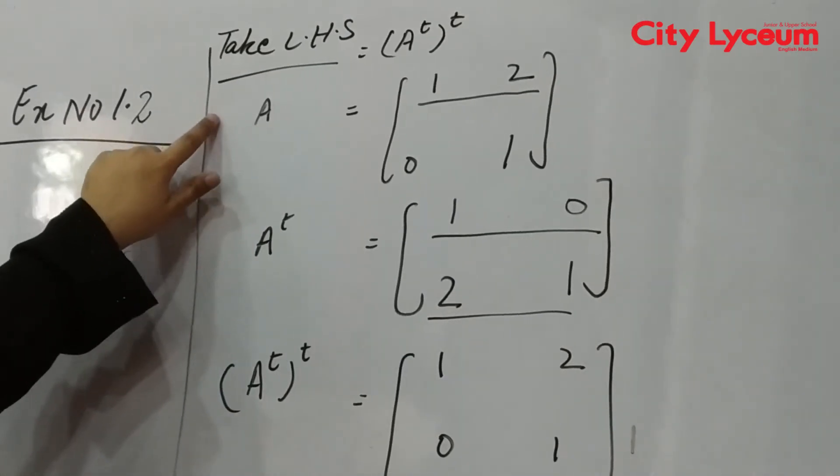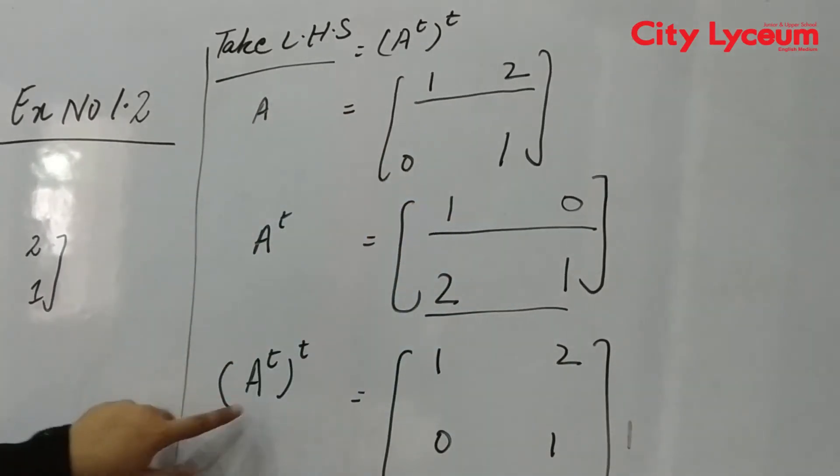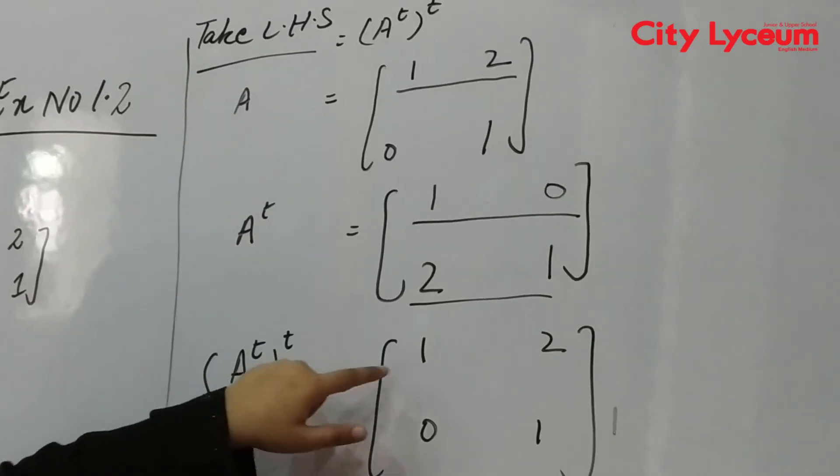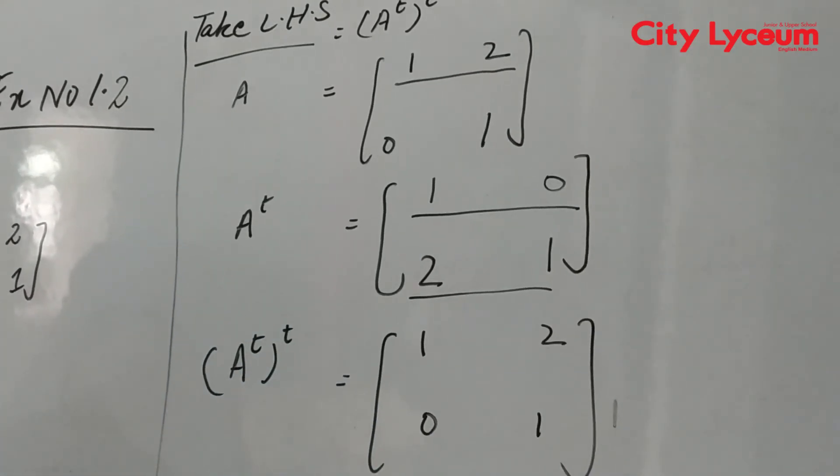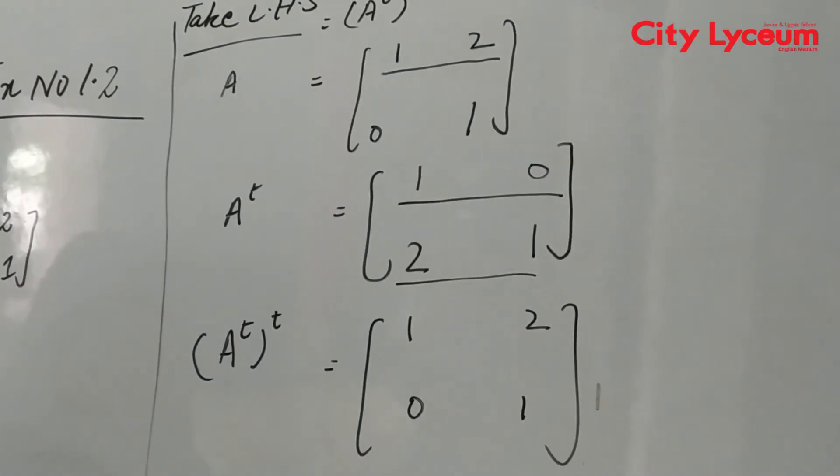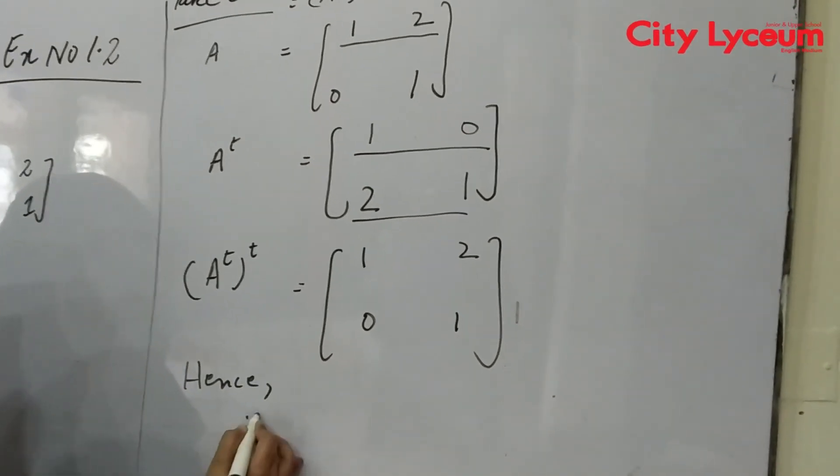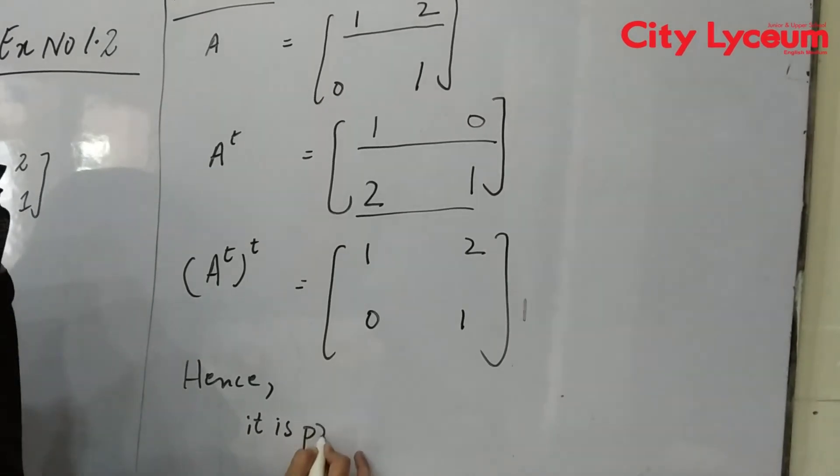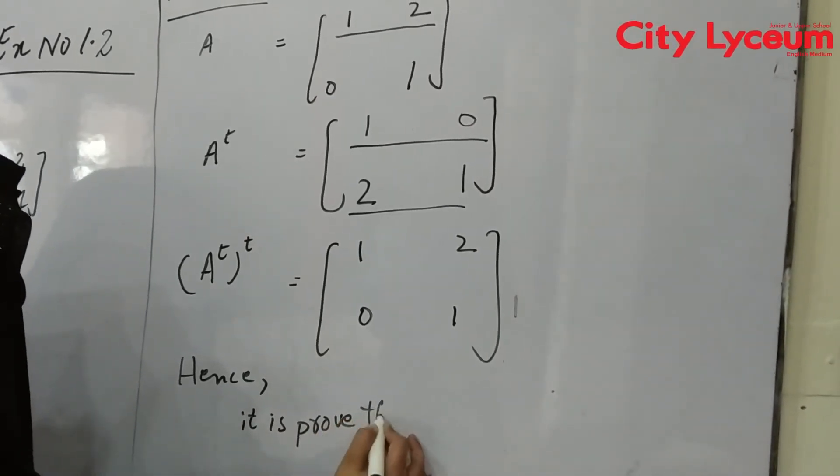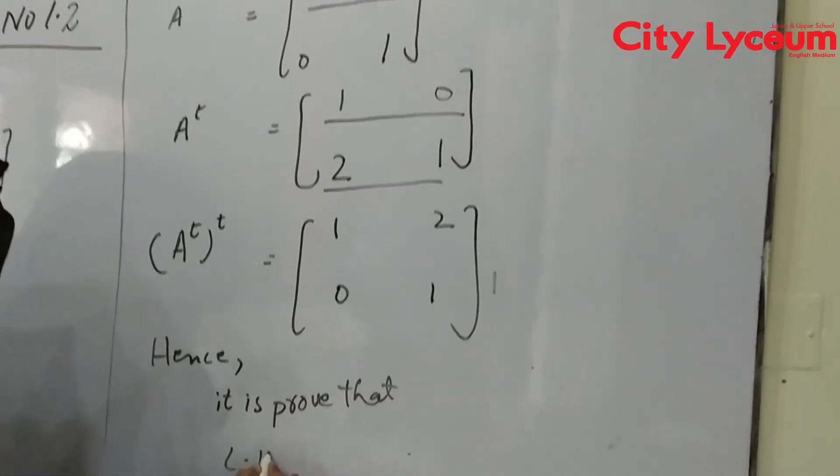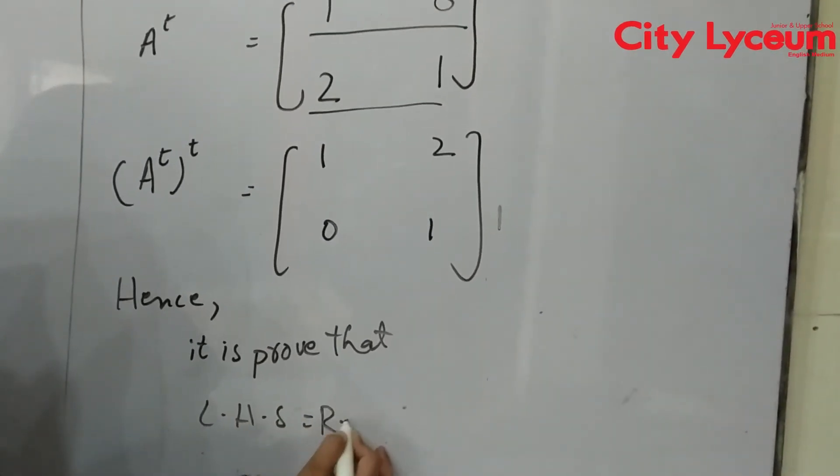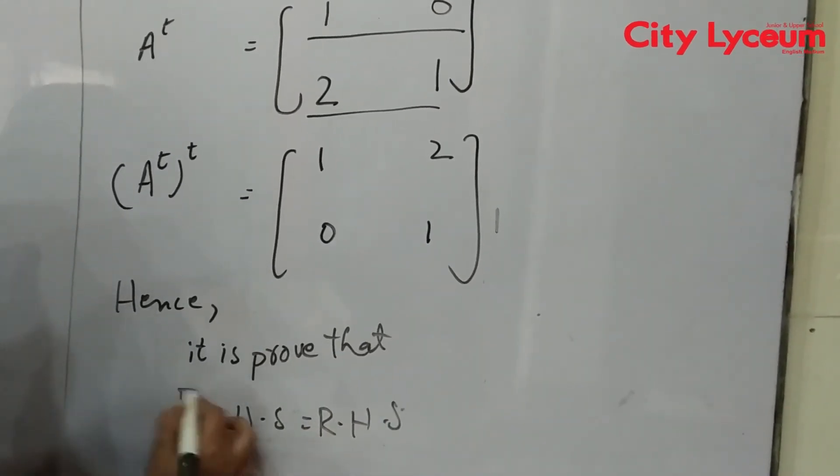Now let's see, the A transpose transpose is [1 2; 0 1]. It means that left hand side is equal to right hand side.